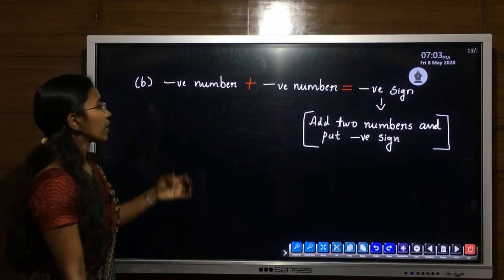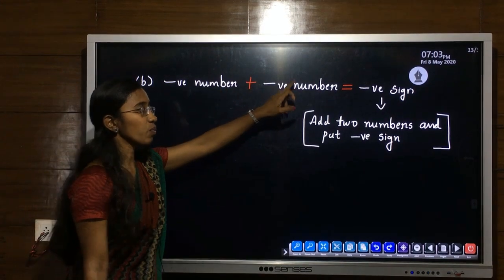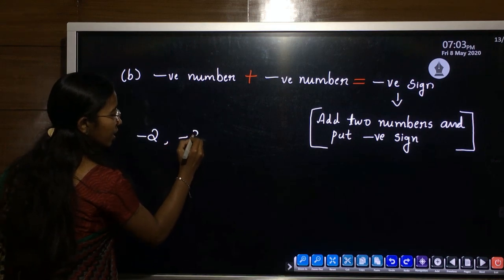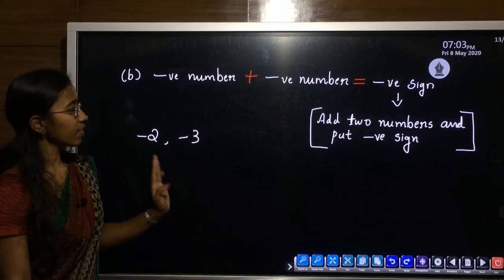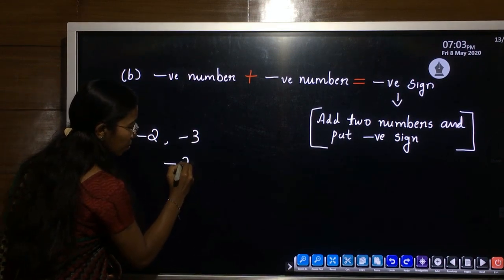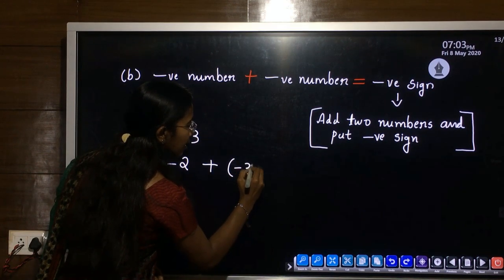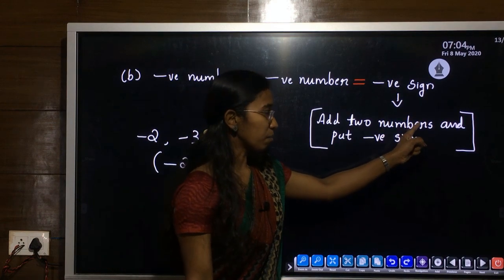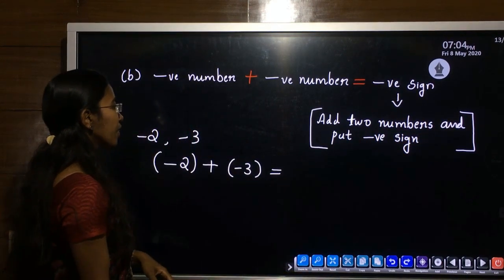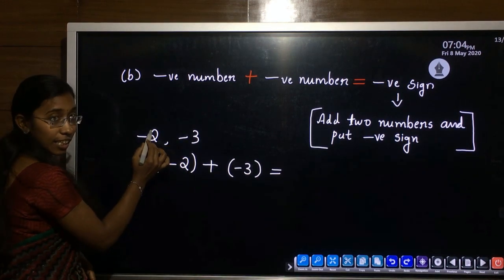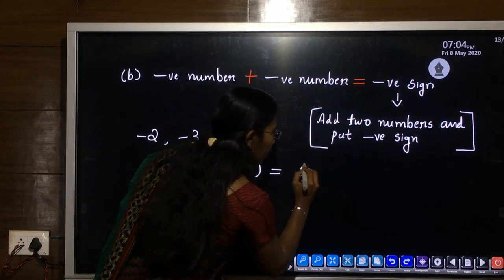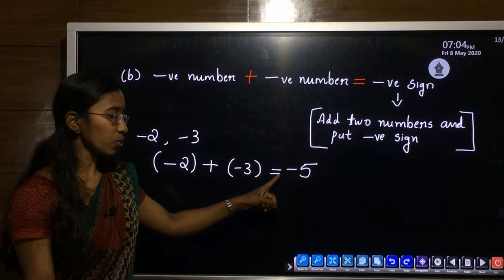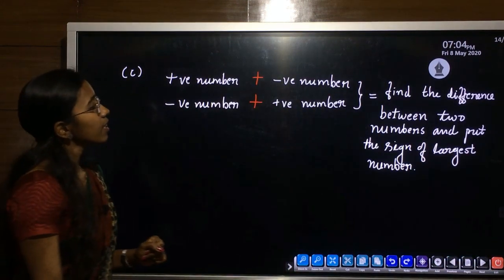Second rule: when we add two negative numbers, what is the sign of the answer? For example, minus 2 and minus 3 are two negative numbers. To find the answer: add the two numbers ignoring the sign — 2 plus 3 is 5 — then put a negative sign. So minus 2 plus minus 3 equals minus 5.